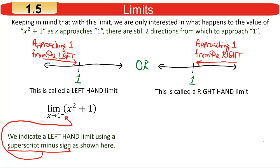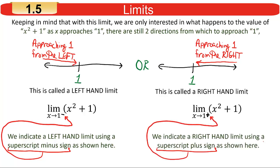Notationally, if we want to indicate a left-hand limit, we put a superscript minus sign on the number that x approaches — in this case a 1 with a superscript minus. That indicates we're looking at a left-hand limit. If we're coming from the right, we use a superscript plus. The minus sign doesn't mean negative number — it just means coming from the left. The plus sign just means coming from the right.